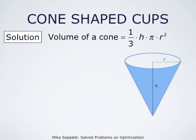We start by recalling that the volume of a cone, whose height is h and radius r, is one-third times h times pi times r squared. So it is one-third times height times the area of the bottom of the cone.